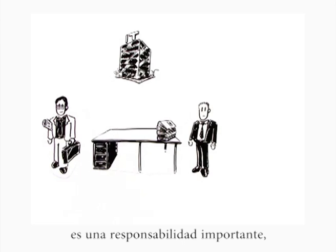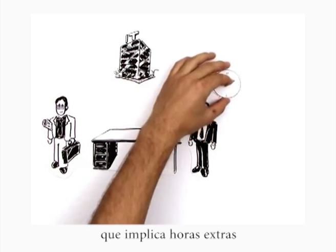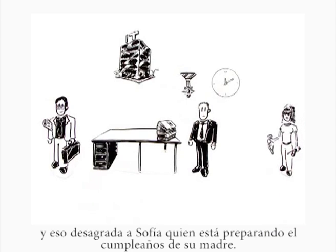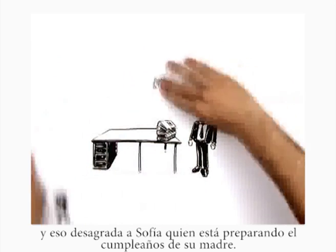On the one hand, this means that Paul now has a great deal of responsibility. On the other, he will also have to work long hours — which his wife Pamela, who is in the middle of organizing her mother's 70th birthday party, isn't too pleased about.